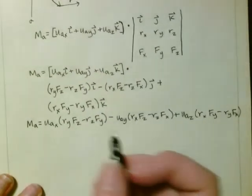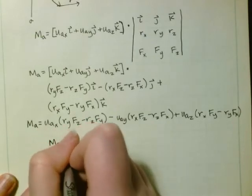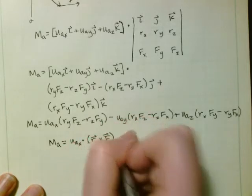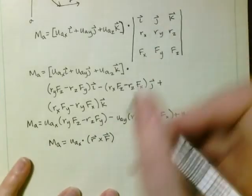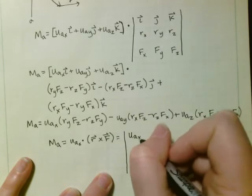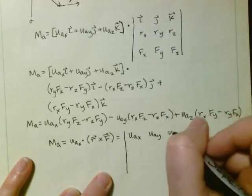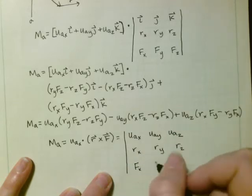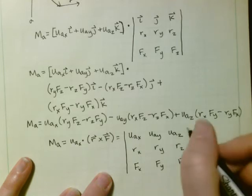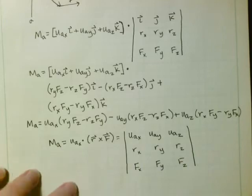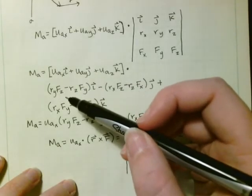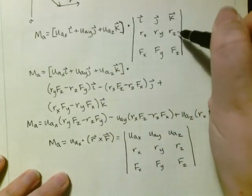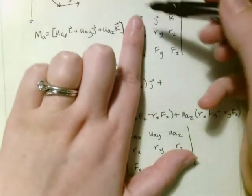So we have that our magnitude is equal to u_a dotted with r cross f, and you can write that as just the determinant: u_ax u_ay u_az, r_x r_y r_z, F_x F_y F_z. And we just proved that because we've got our determinant, the r_y f_z minus r_z f_y, right? So that's r_y f_z minus r_z f_y and you multiply it by i, right? The part that you covered up.